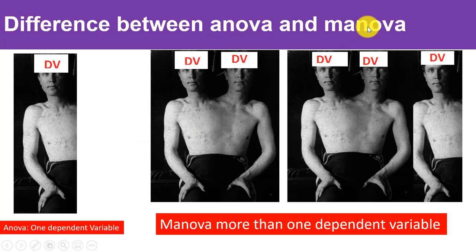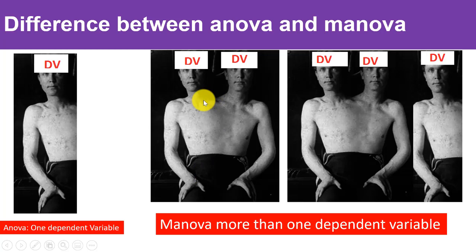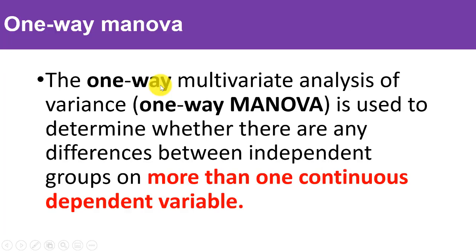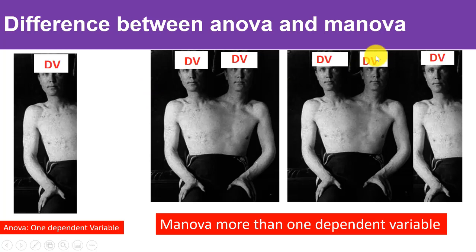Let me show you the difference between ANOVA and MANOVA figuratively. A man with only one head — we are investigating only one dependent variable, maybe achievement alone — that is ANOVA: one dependent variable. But a man with two heads has one dependent variable of achievement and another of attitude. When there is more than one dependent variable, it is multivariate — that is MANOVA.